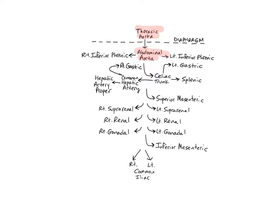The right and left inferior phrenic arteries are the first paired branches off the abdominal aorta. They supply the diaphragm — the word phrenic refers to the diaphragm — as well as the suprarenal or adrenal glands.